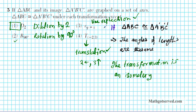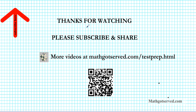The only transformation that does not preserve congruency — the only non-isometry — is option number 1, dilation. Any dilation by a factor other than 1 will alter the size. So our answer is option number 1. Thanks for watching — feel free to subscribe and post a comment. More clips can be found at mat.save.com/testprep. Have a wonderful day.